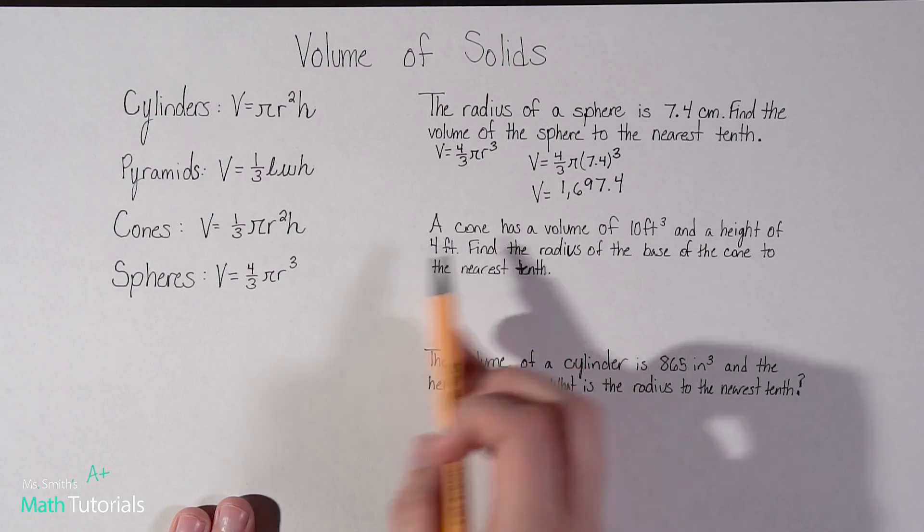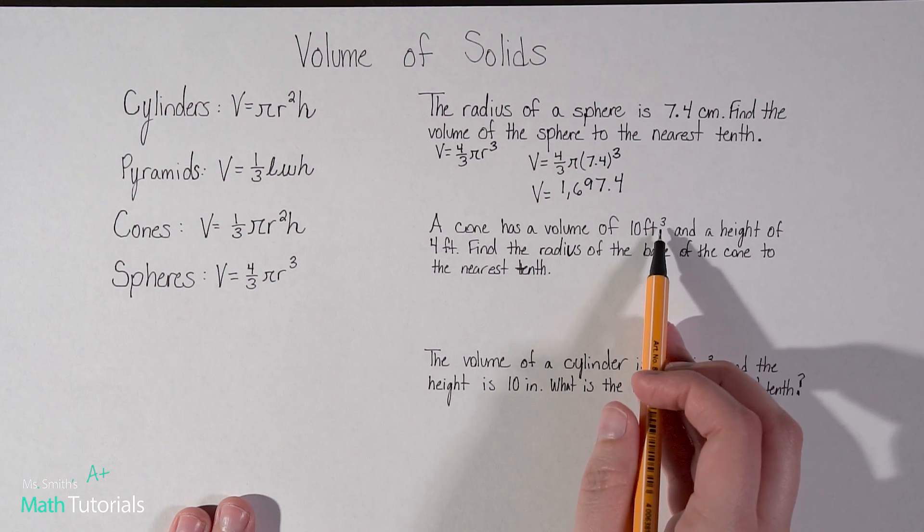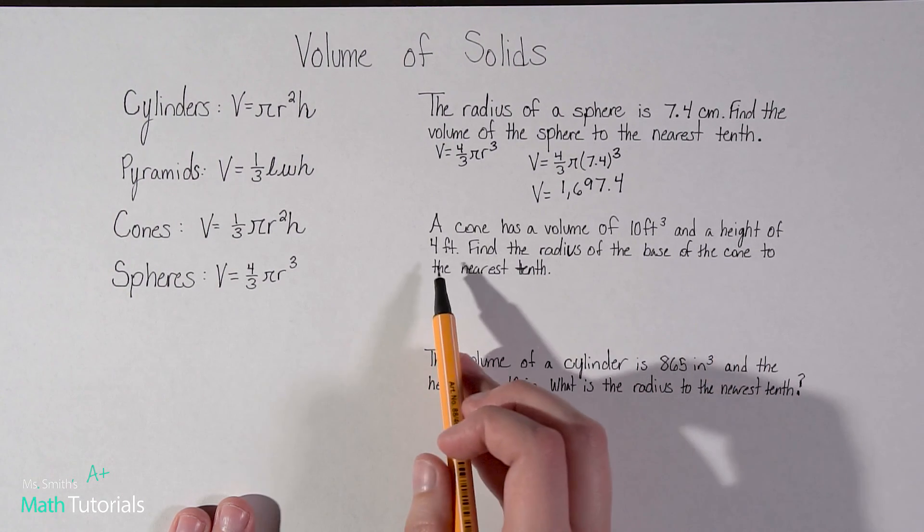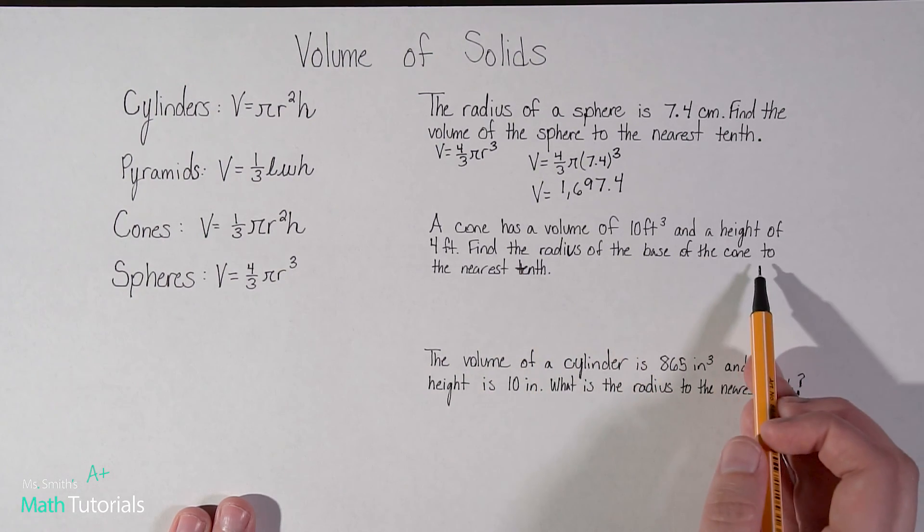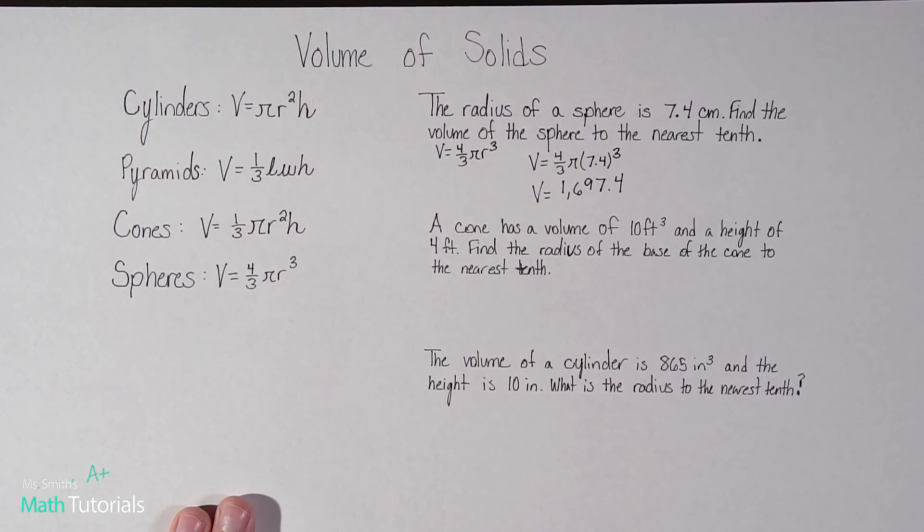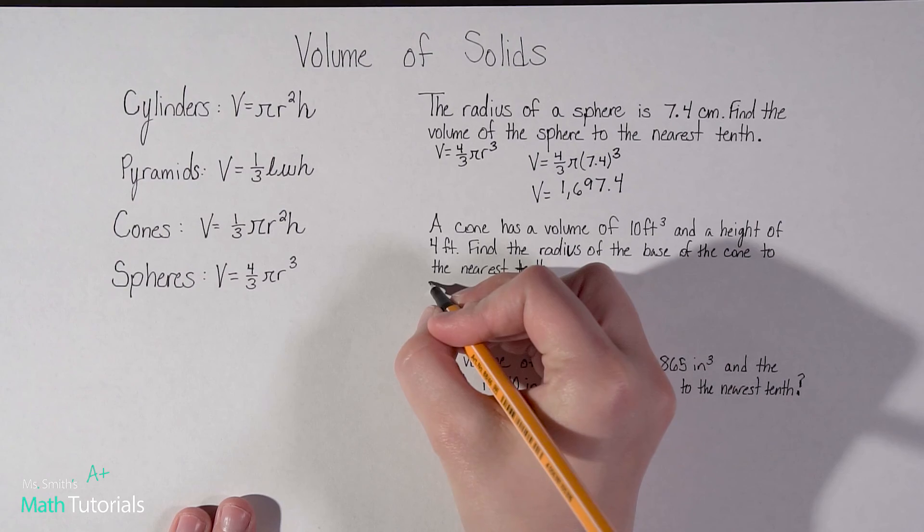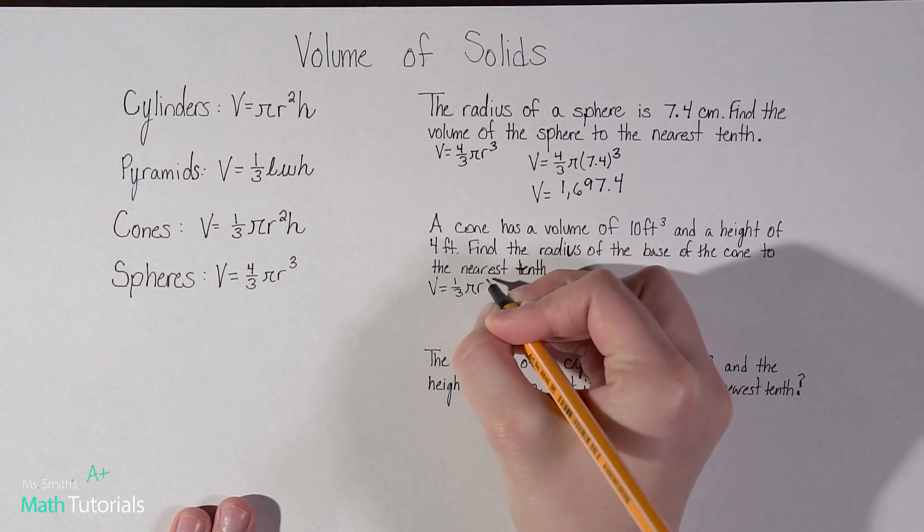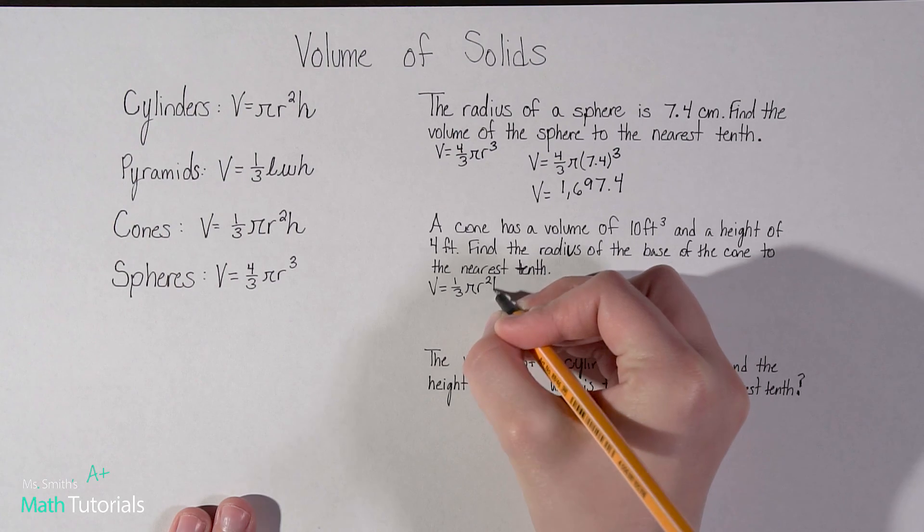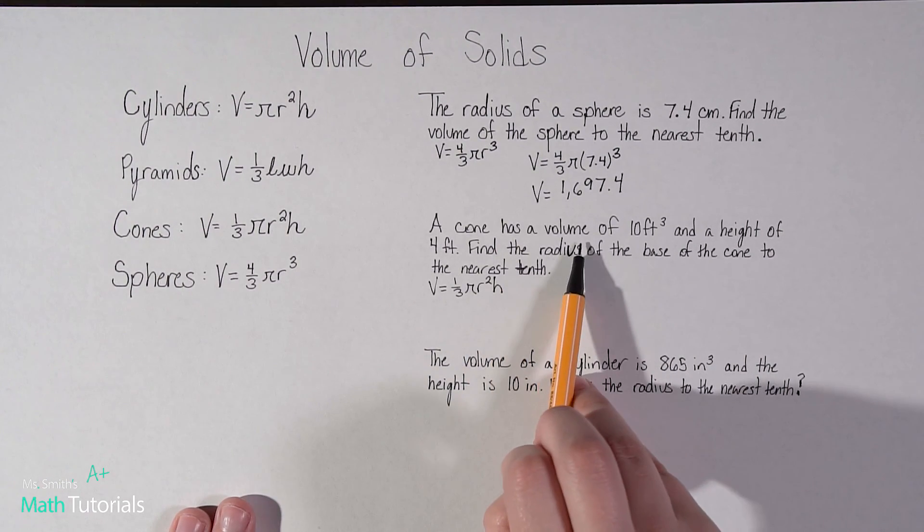A cone. So we're talking about cone now. Cone has a volume of 10 feet cubed and a height of four feet. Find the radius of the base of the cone to the nearest tenth. Again, sounds really complicated. It's not once we break it down. So this time for cone, we're using this formula. So V equals one third pi r squared times height.